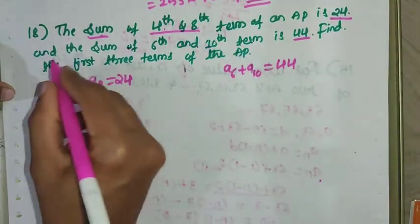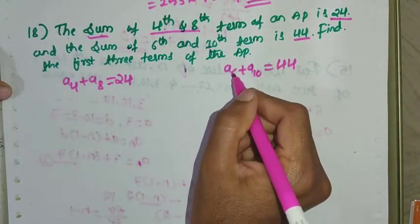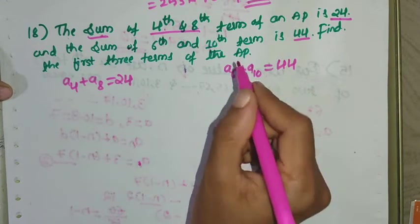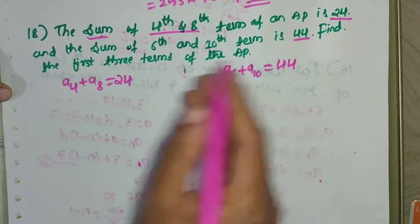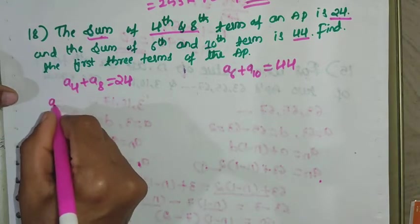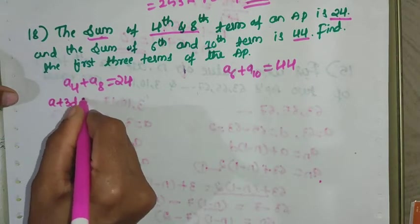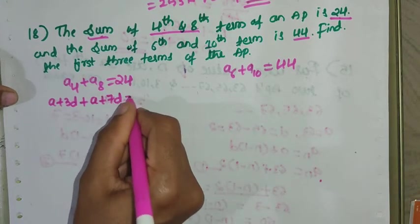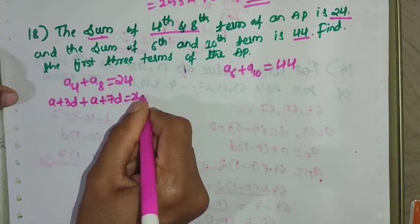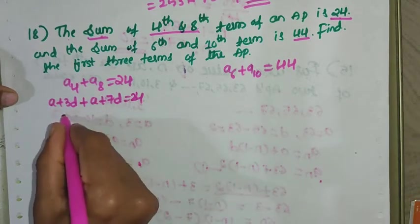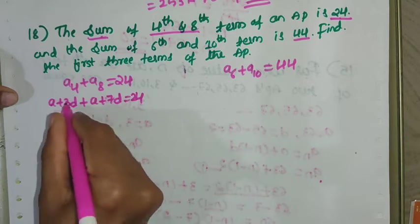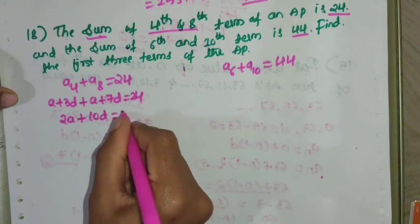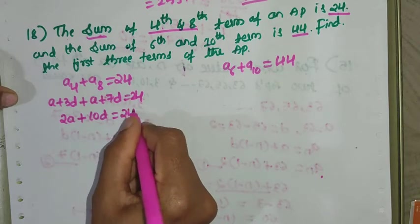Find the first three terms of the AP. To find the first three terms we need to find A and D. A_4 can be written as A + 3D, and A_8 as A + 7D. Their sum equals 24, so 2A + 10D = 24.